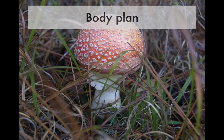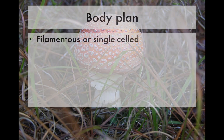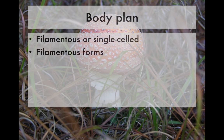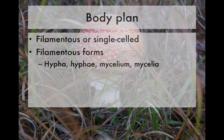As far as body plan, fungi can be single-celled, unicellular, truly multicellular, or colonial. When they are multicellular, they are typically found in a filamentous form — they look like a series of threads under the microscope. The filamentous forms may be arranged as a singular hypha, just one tiny thread, or when you have many of them, they're called hyphae. A large mass of hyphae forms a structure called a mycelium, typically large enough to see with the naked eye, and the plural is mycelia.